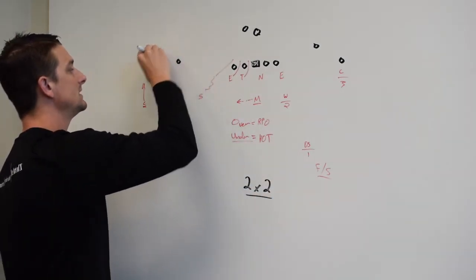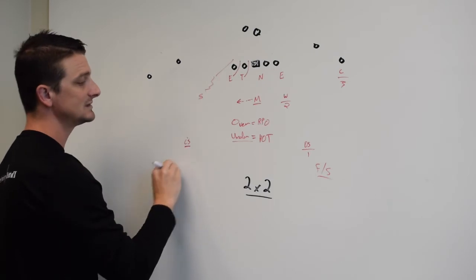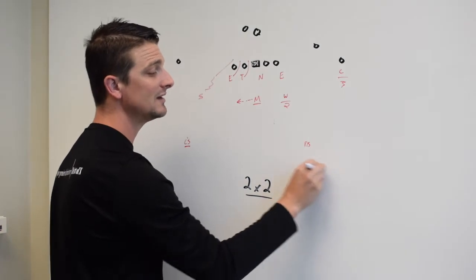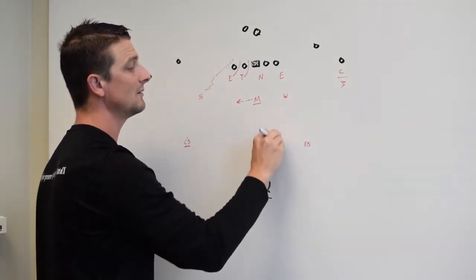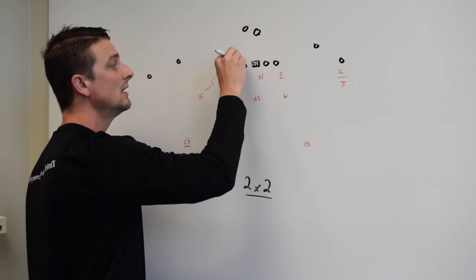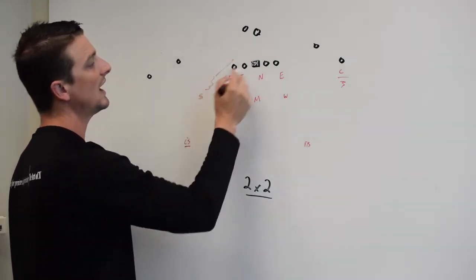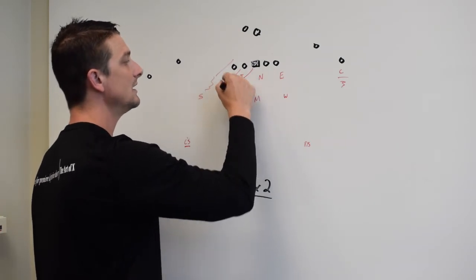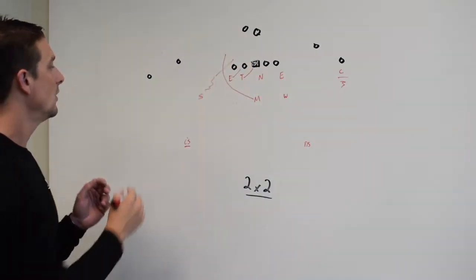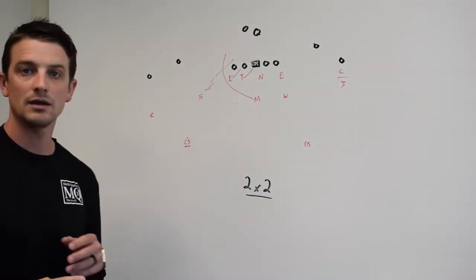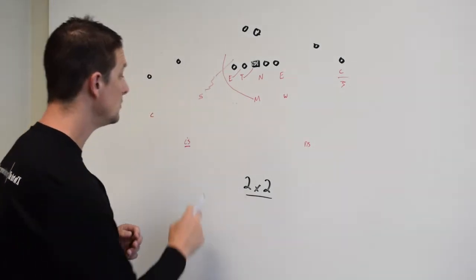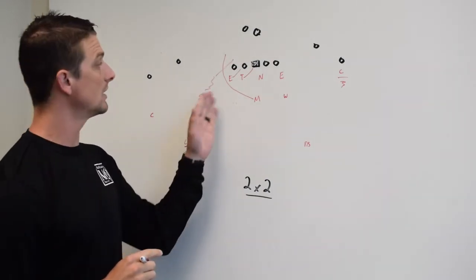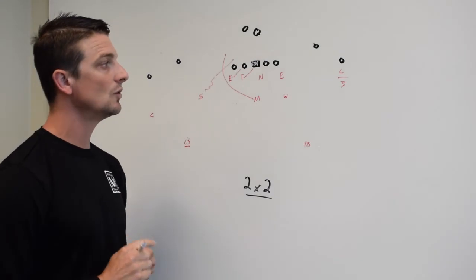Now, let's talk about what a blitz is. If I have a blitz, a blitz is now going to send six or more people. So, now the distribution is going to change. The most famous way to do blitzes is from a fire zone. If I have this, this is my fire zone. I've got these guys going. I'm going to send him off the edge. Now, I've sent six. What am I going to do?